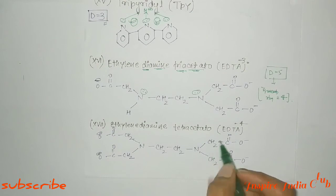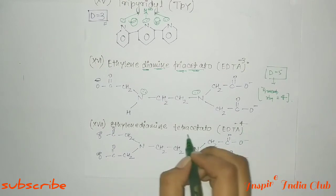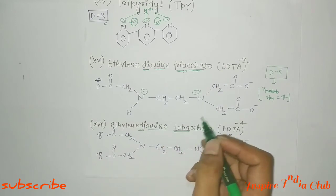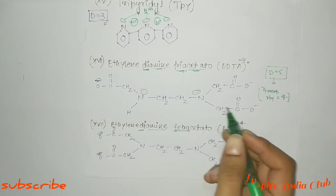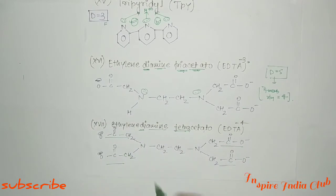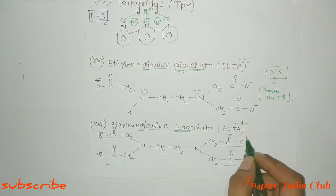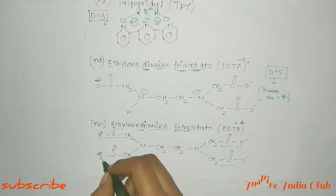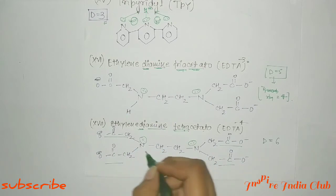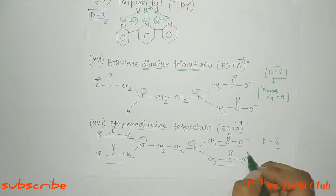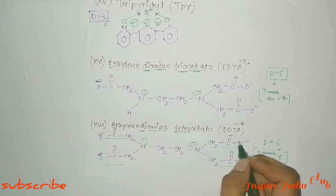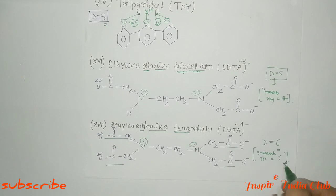Next is ethylene diamine tetraacetate — EDTA with a minus 4 charge. It has 4 acetate groups and 2 amine groups. The 4 oxygen donors (one minus each from acetate) and 2 nitrogen donors give a total of 6 donor sites, so denticity is 6. You will get 5 five-member rings, which are stable.